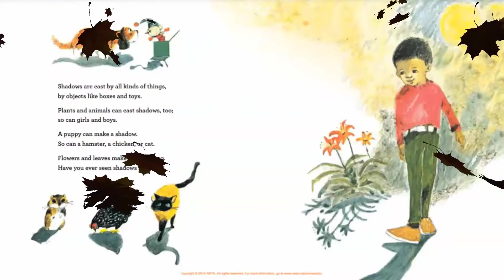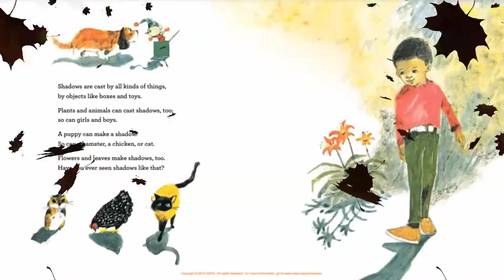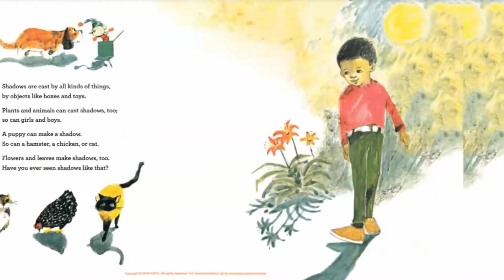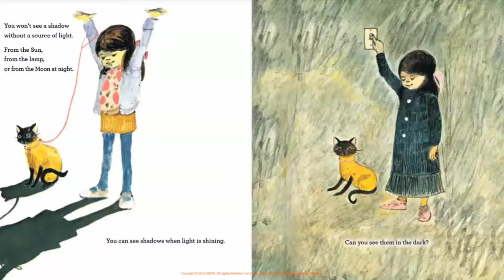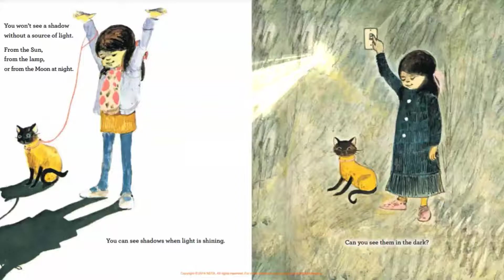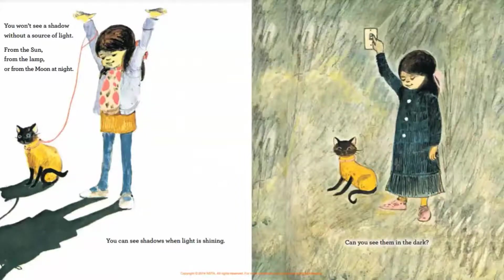You won't see a shadow without a source of light — from the sun, from the lamp, or from the moon. At night you can see shadows when light is shining. Can you see them in the dark?